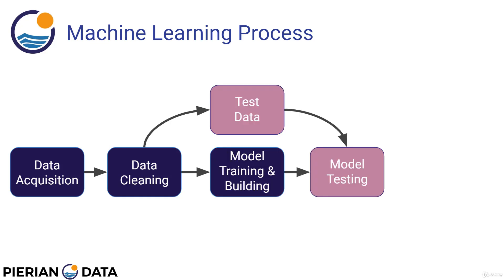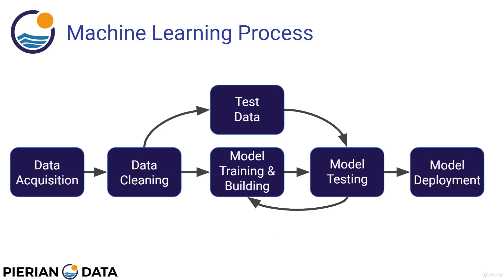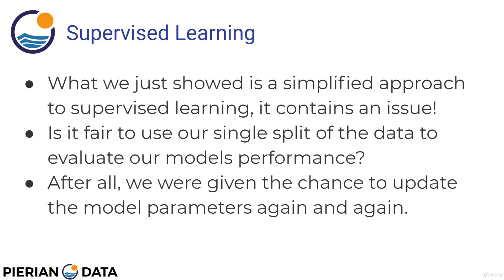Then we want to know how well our model actually performed, so we run that test data through the model and compare the model's predictions to the actual correct labels that the test data had — because remember, we actually know the correct labels for the test data. We can evaluate the model and then maybe go back and adjust the model parameters, perhaps adding more layers or more neurons to try to get a better fit. Once we're satisfied, we can then deploy the model to the real world.